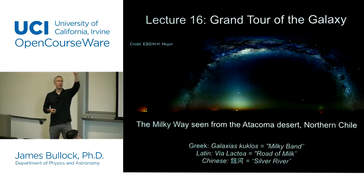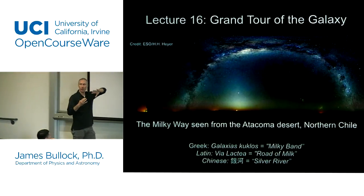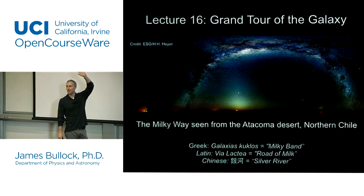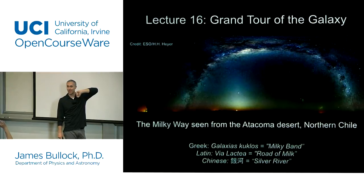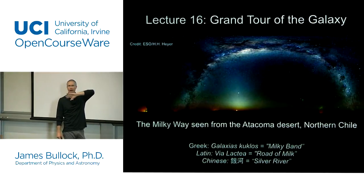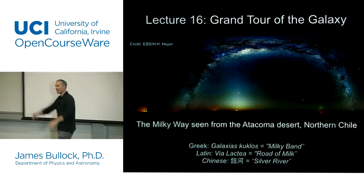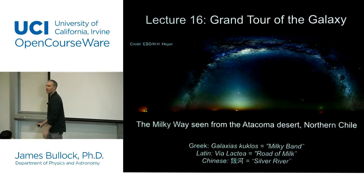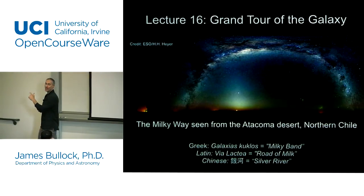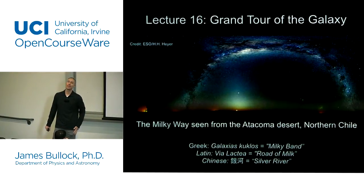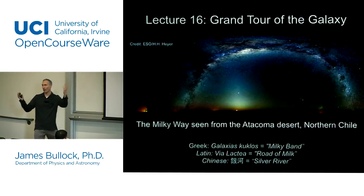Who has seen the Milky Way? Who's been to a place where it's actually dark enough and the skies are clear that you can see it? So who has not seen it? You need to go camping — get out away from the lights when it's clear. If you're out at night at Joshua Tree, you can see it. It's not that far away. It's beautiful though. The people who've seen it can tell you all about how wonderful it is.